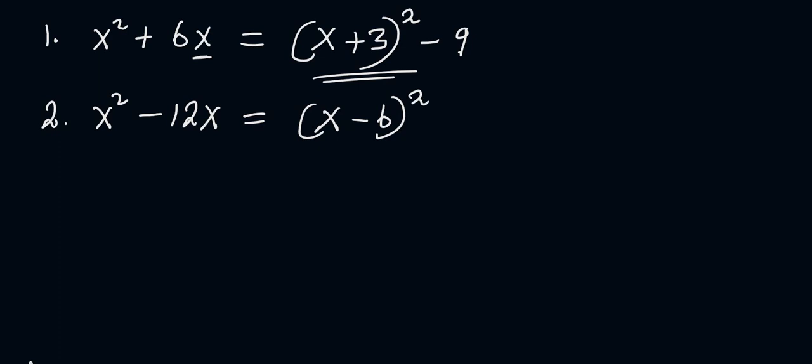Now, the next step is to look at this negative 6 that you have here. Square it — negative 6 squared is positive 36. So what are you going to do with that value? Subtract it from what we have here, so that will be minus 36. And this is the final answer.